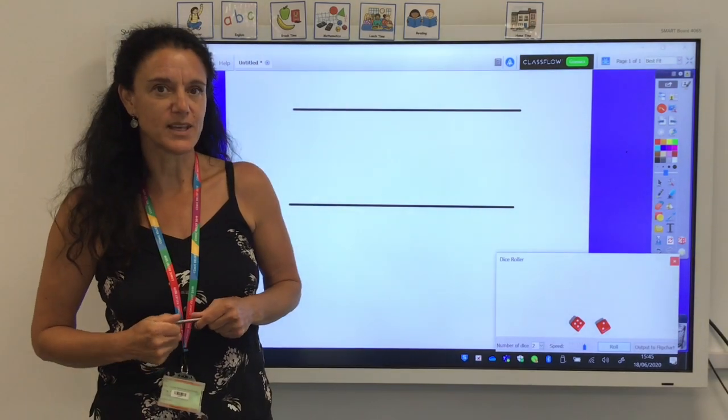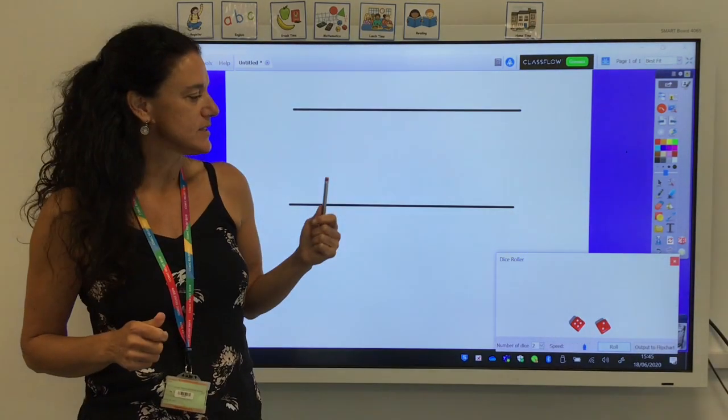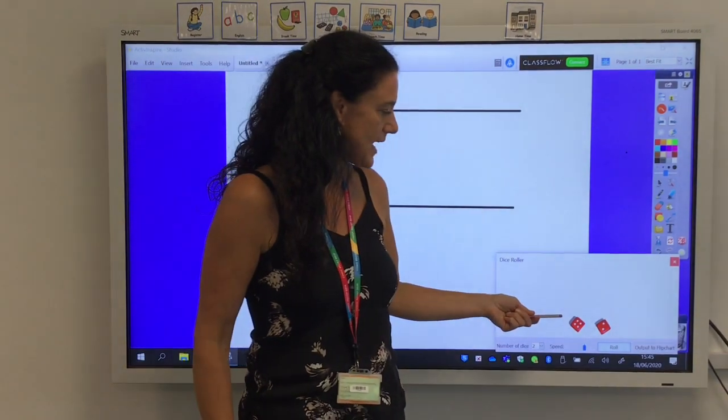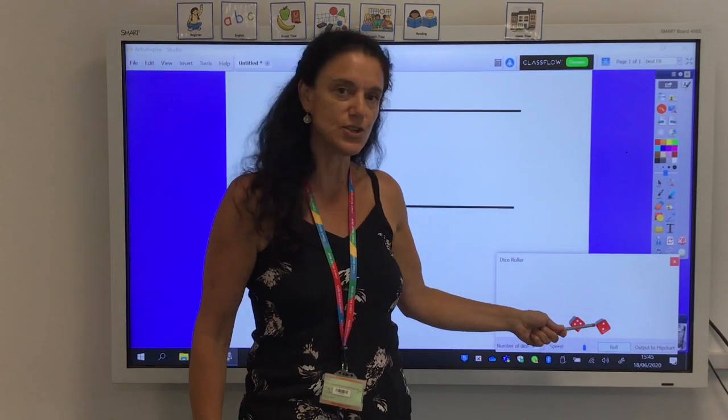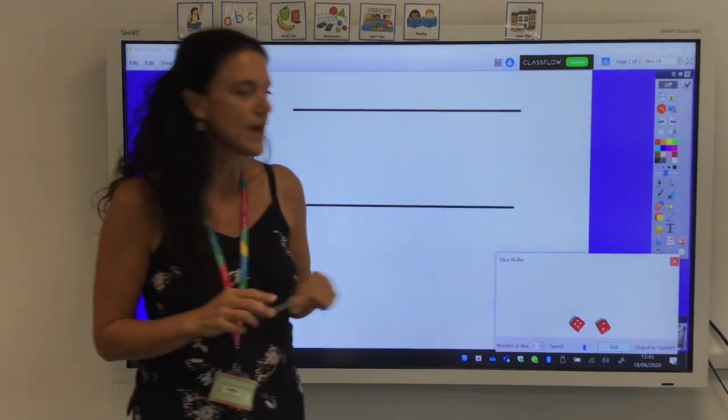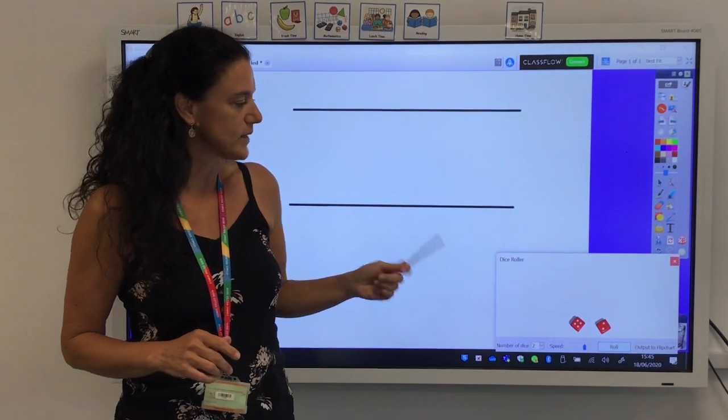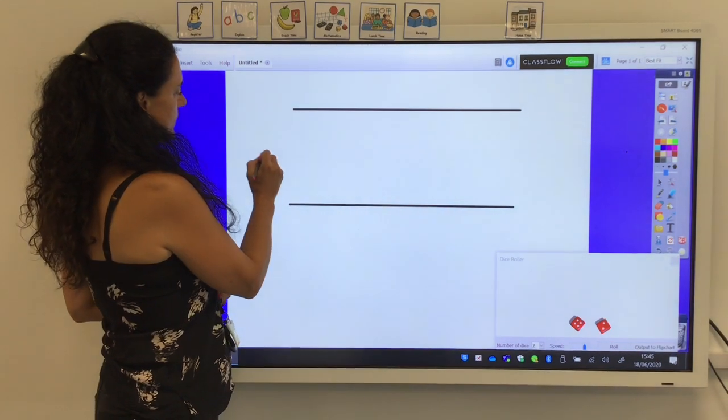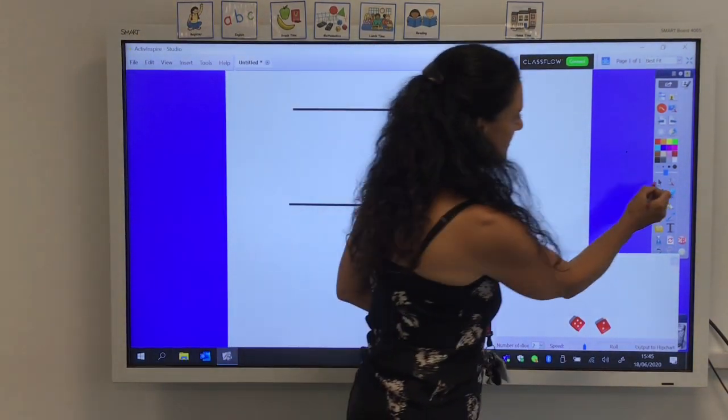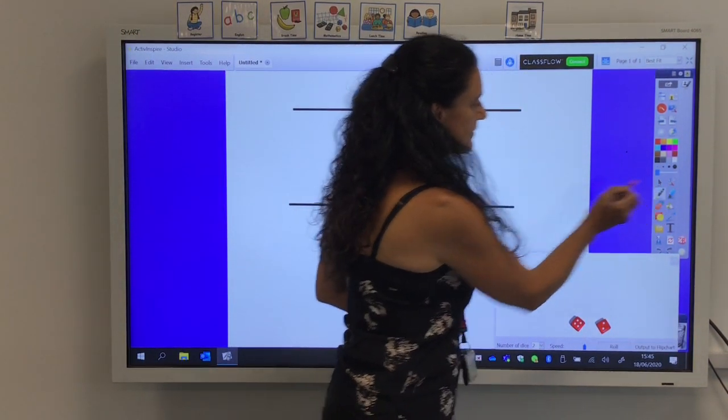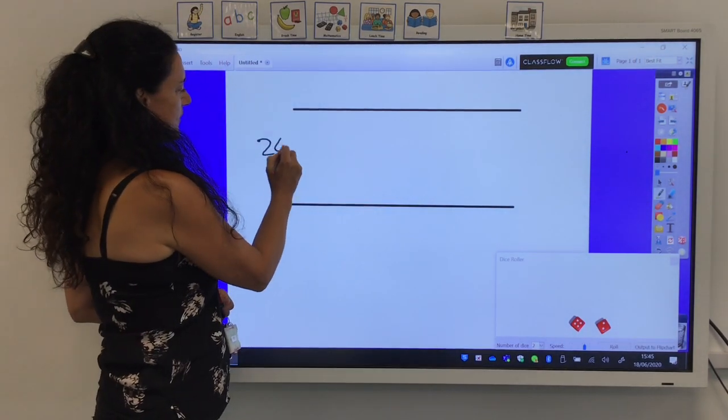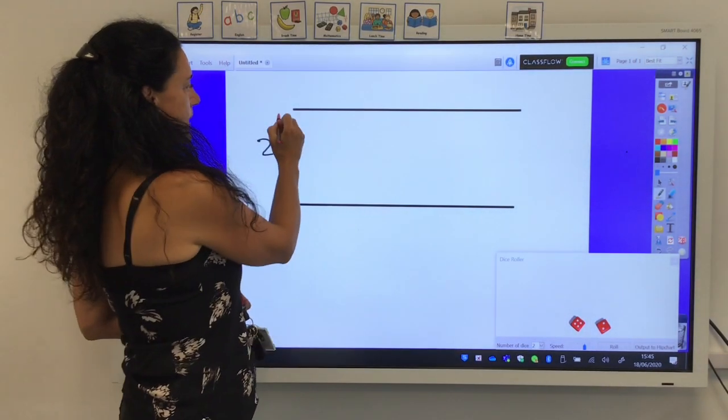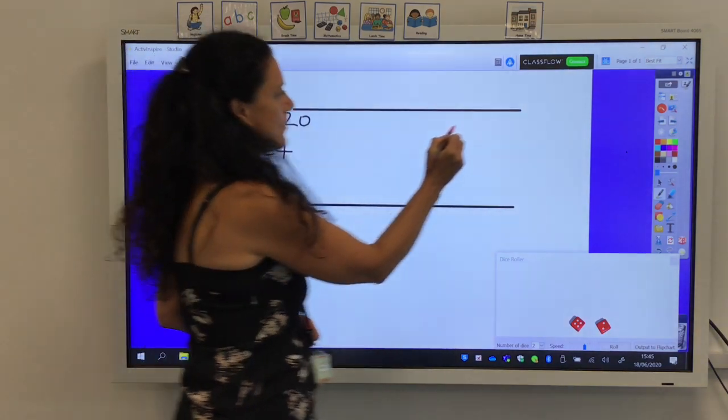In this game we need to revise rounding to the nearest 10. I've just rolled the dice and got a 4 and a 2. I can use this number either as 42 or 24. So as 24,